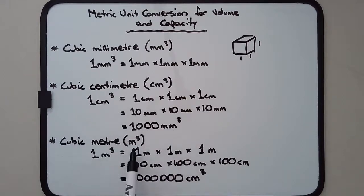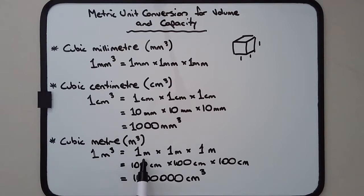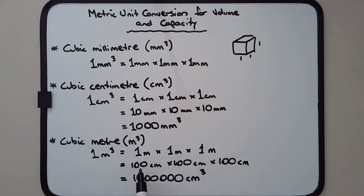Then we have the cubic meter, defined as a cube that's one meter by one meter by one meter, which equals 100 centimeters × 100 centimeters × 100 centimeters — that's one million cubic centimeters.